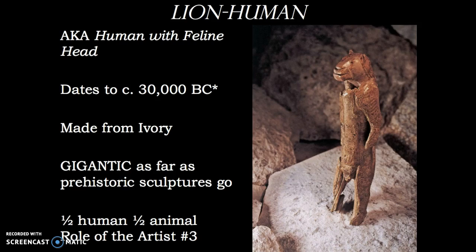The later we get in the class, we have more specific time periods. Note that the Lion-Human is made from ivory, and a lot of early sculptures are created from ivory. As far as prehistoric art goes, it's gigantic — most of prehistoric art you can hold in your hand. This is about a foot tall, and the artist had to use the power of imagination, fulfilling role number three — giving form to the immaterial, something that doesn't exist. This work is half human and half animal. It was found in a cave in Germany; however, World War II was raging at the time and the artwork could not be recovered until after the war.